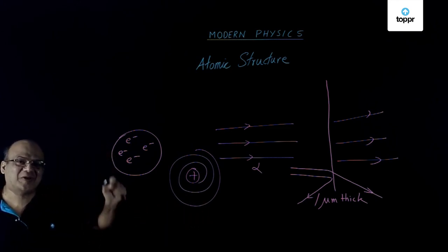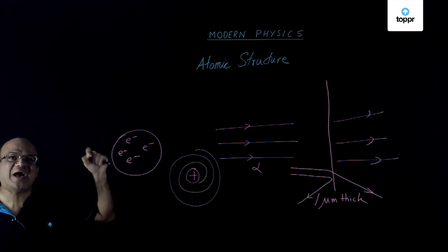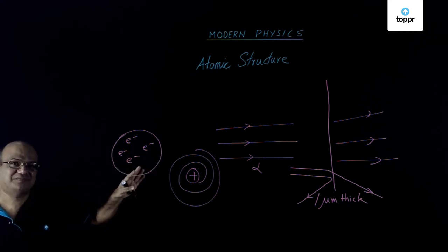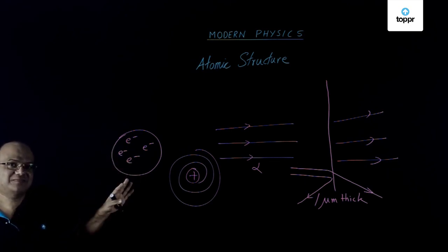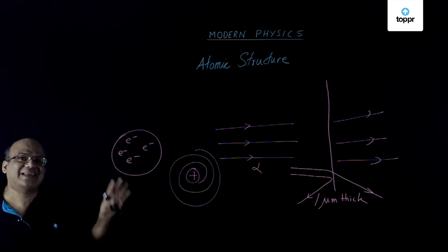Now in the next lesson, we are going to learn about Bohr hydrogen atom. Bohr was actually a student of Rutherford. And he gave his model of the hydrogen atom in 1913. Rutherford gave his model in 1911.